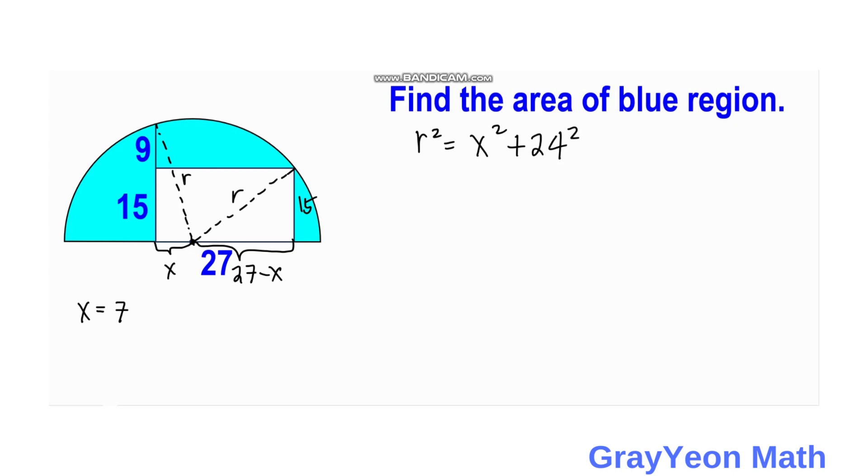Next is we use the equation of Pythagorean theorem to find the value of R square. So R square is equal to x square and that is 7 square plus 24 square. And R square is equal to 49 plus 24 square and that is equal to 576. And this sums up to 625.